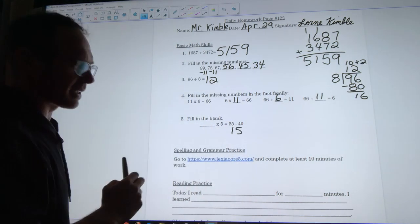Last question says something times 5 is equal to 55 minus 40. So your first step is to figure out what 55 minus 40 is. Well 55 minus 40 is 15. And so from there I just have to think well how many 5's does it take to get to 15? Well 1 five is 5, 2 fives is 10, 3 fives is 15. So 3 times 5 would be 15.